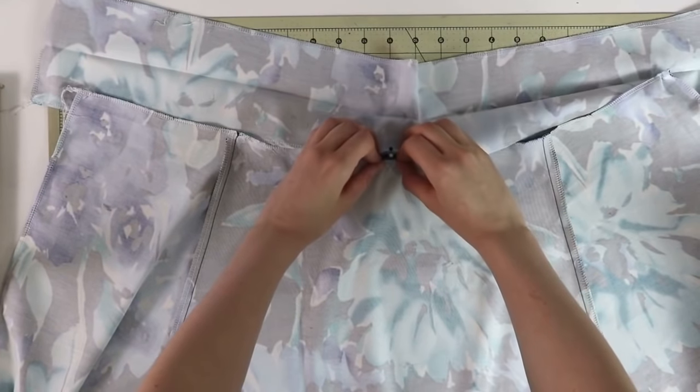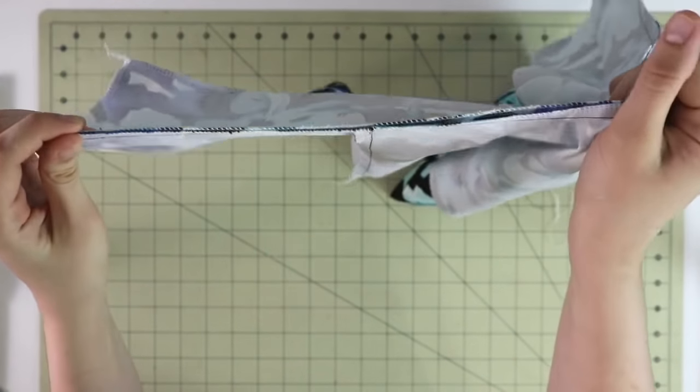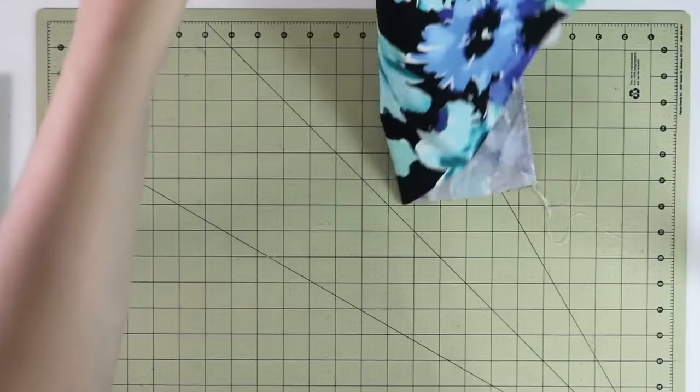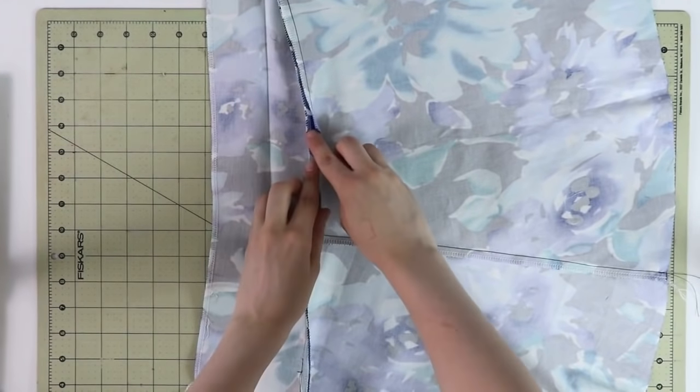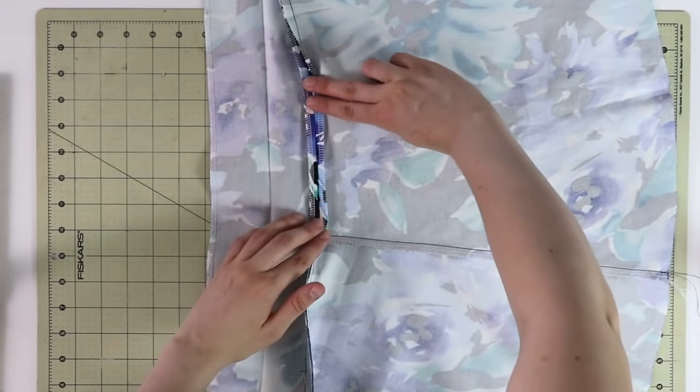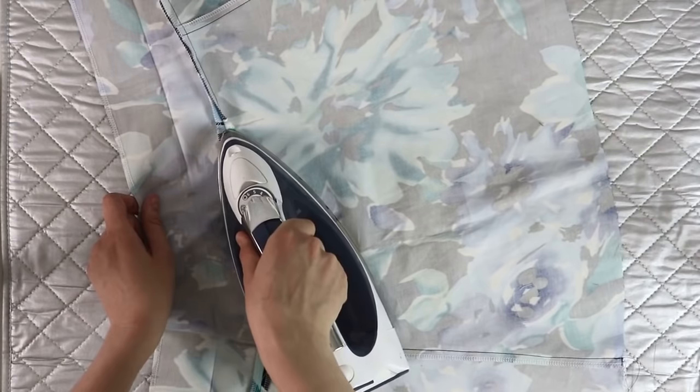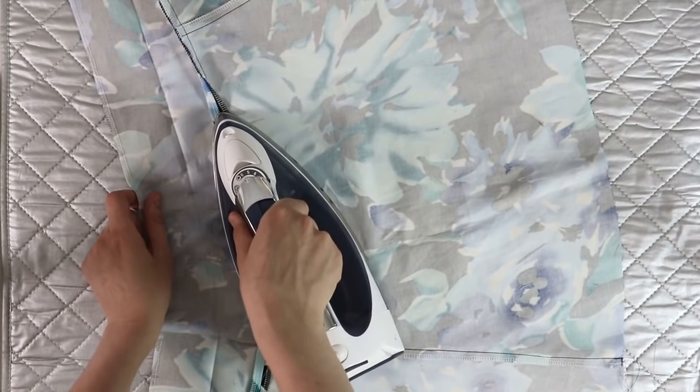Pressing your garment and the seams between the steps is going to be a really frequent thing, especially when we're talking about inserting invisible zippers, so definitely have your iron and ironing board handy.